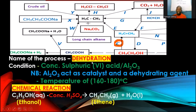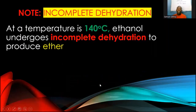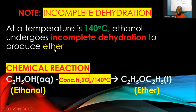Note: if incomplete dehydration occurs at a lower temperature of 140°C, ethene is not produced; instead, another chemical called ether is formed.